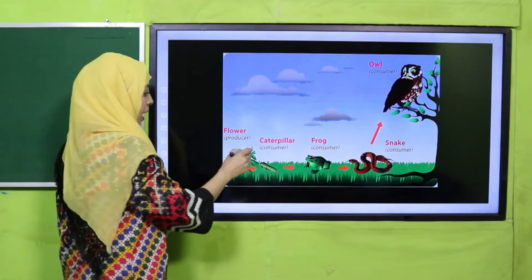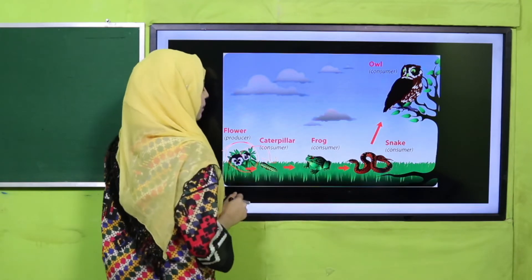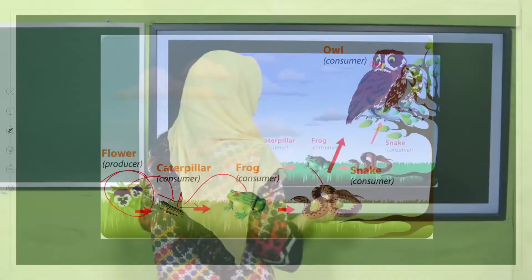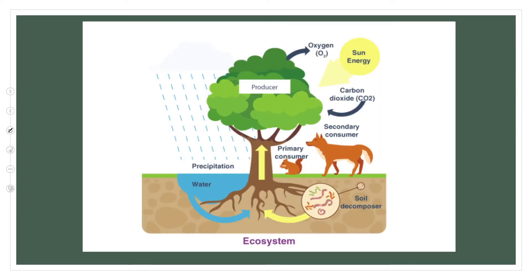Here you can see there are flowers. They will be eaten by a caterpillar, then a frog will eat the caterpillar, a snake will eat the frog, and an owl will eat the snake. You can see there is a food chain and the top consumer is the owl. This is an interaction between plants and animals — plants are the producers, they make their own food, and other animals which need energy to grow consume the plants, and then other animals grow on the plant-eating animals. This is how they interact.